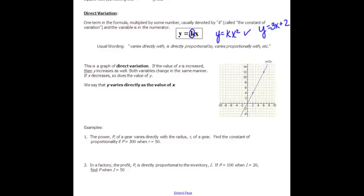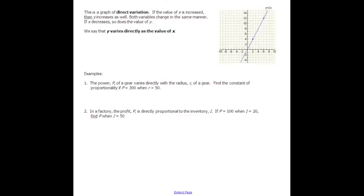Let's take a look at the examples. Example number one is a relationship between the power of a gear and the radius of the gear. As the radius goes up, so does the power. So this is direct variation, varies directly with, it's going to be p = kr. We want to find the constant of proportionality. This is just plug and chug, and you can solve that, getting k = 6.